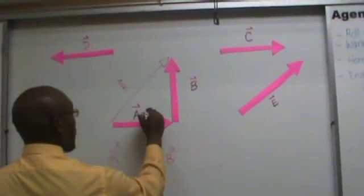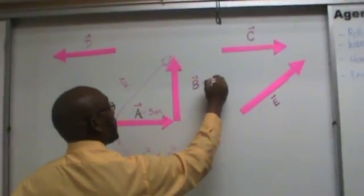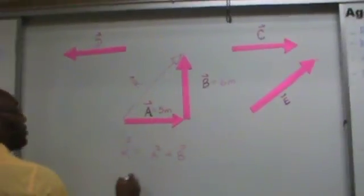So once again, if A is equal to 5 and B is equal to 6 meters.